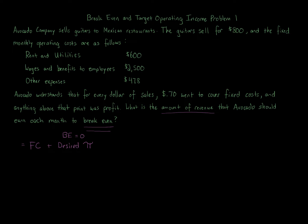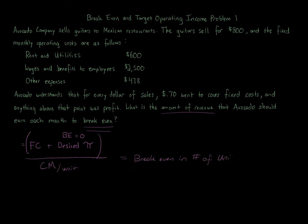I always use that full formula because some questions will ask for a specific operating income, and you put that amount in as the desired profit. We take fixed costs plus desired profit — which equals zero for break-even — and divide by the contribution margin per unit. That gives you the break-even number of units. Always round up to the next number; if you get 32.12 units, round up to 33. You always round up because you can't have a partial unit.